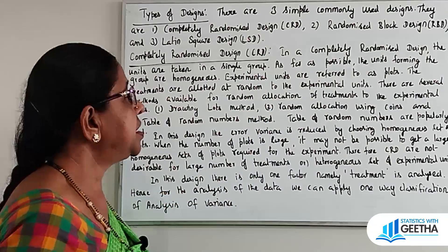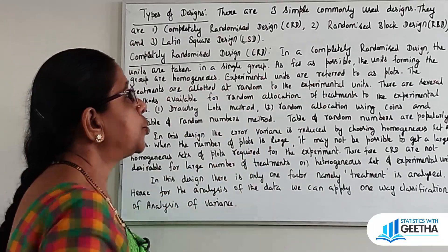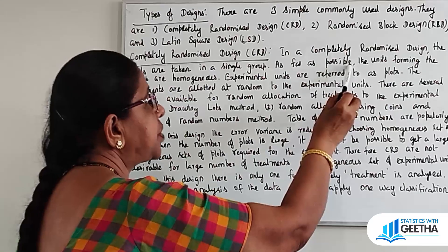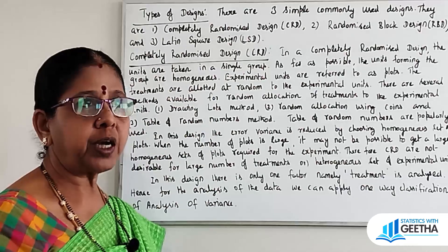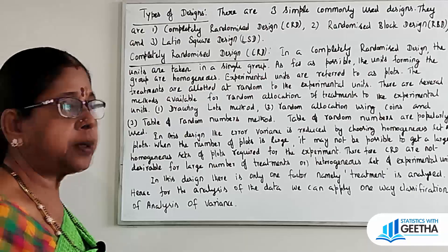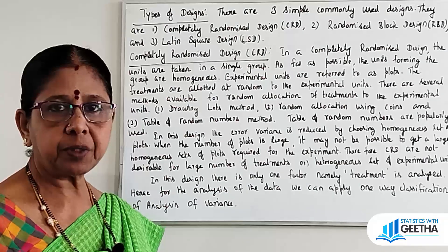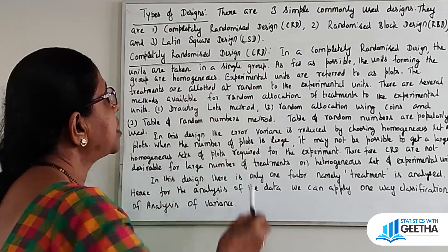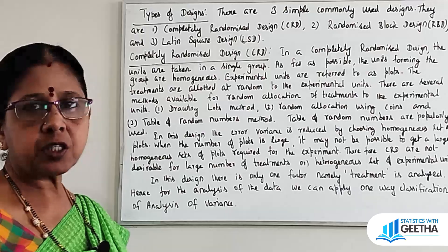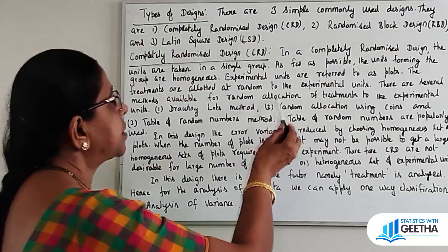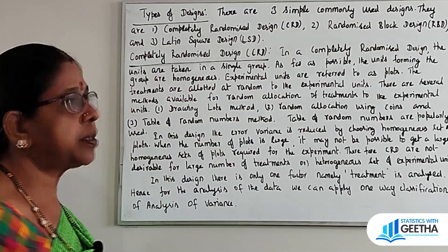In a Completely Randomized Design, the units are taken in a single group. As far as possible, the units forming the group are homogenous. Experimental units are referred to as plots. The treatments are allotted at random to the experimental units. There are several methods available for random allocation of treatments to the experimental units.